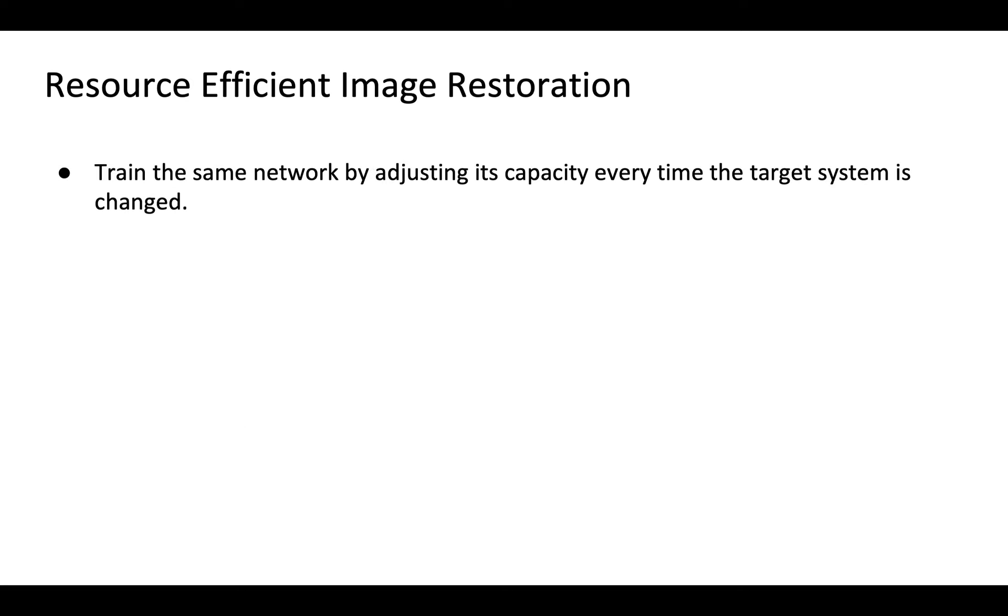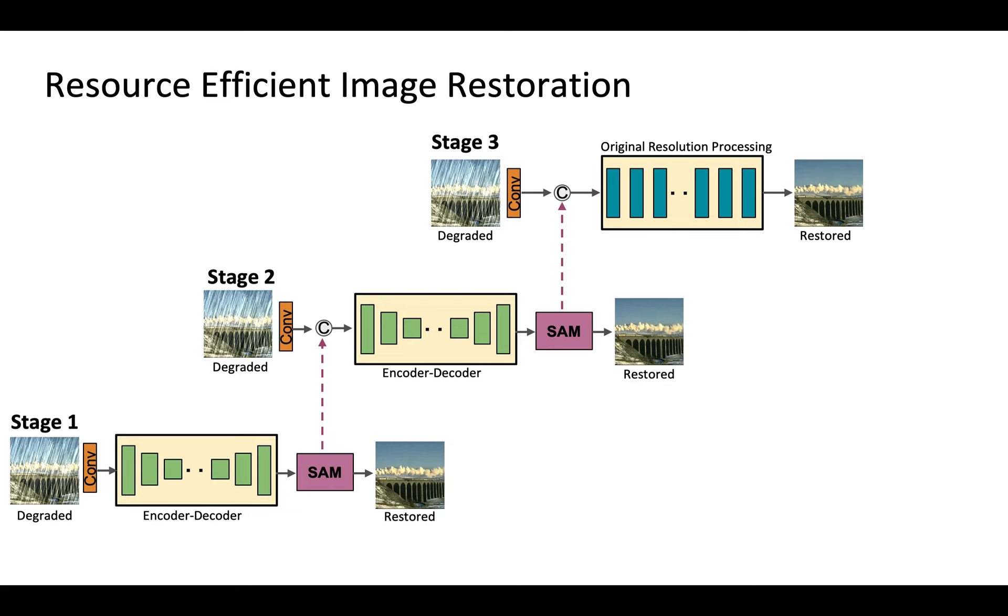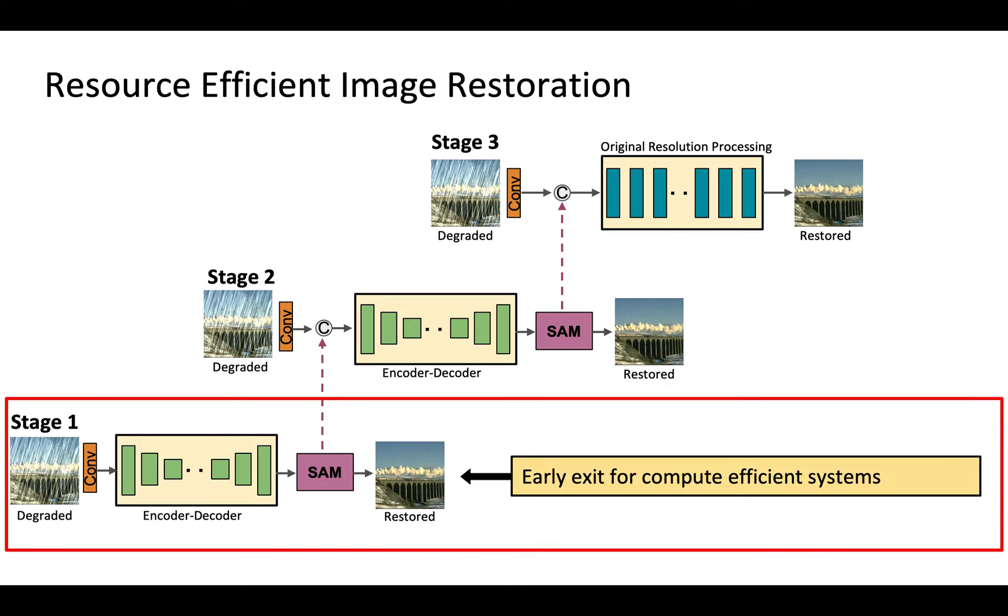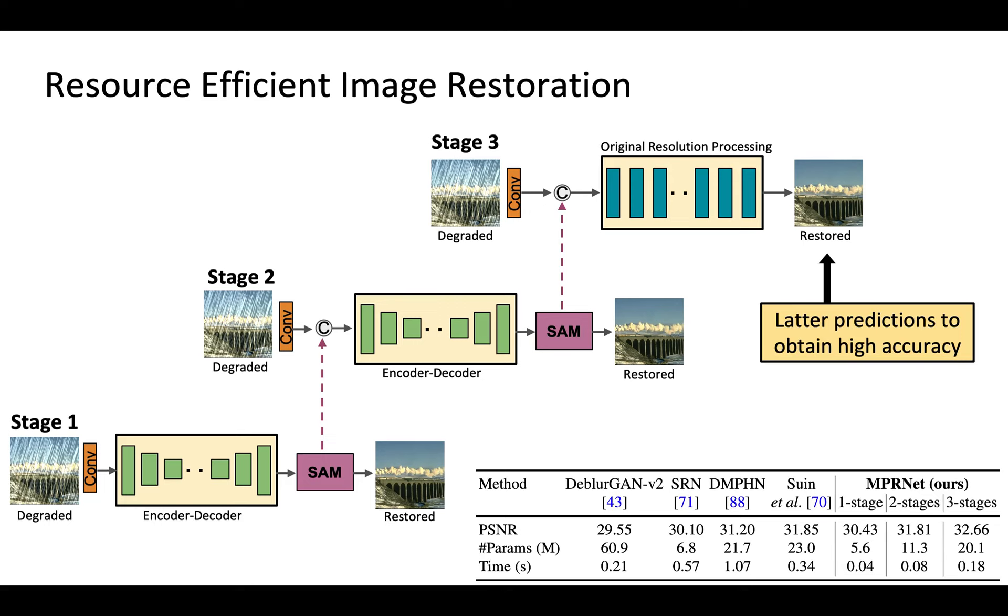One solution is to train the same network by adjusting its capacity every time the target system is changed. However, it is tedious and infeasible. A multi-stage approach naturally offers a more desirable solution. For example, when we have a system with limited resources, we can use earlier predictions and take early exit. And when the computational cost is of no concern, we can use final output to obtain high accuracy.